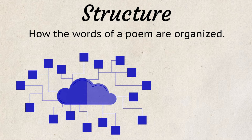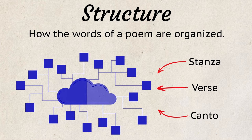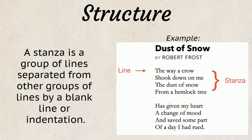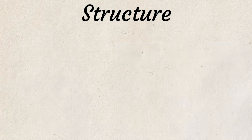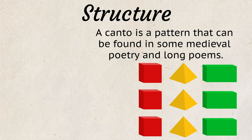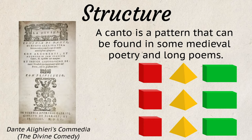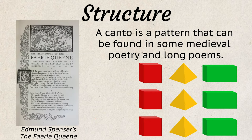Structure is how the words of a poem are organized. The elements of structure include stanza, verse, and canto. A stanza is a group of lines separated from other groups of lines by a blank line or indentation. A verse is a stanza that doesn't have a specific number of lines, but it all goes together and makes sense. A canto is a pattern found in some medieval and long poems like Dante Alighieri's Commedia, The Divine Comedy, and Edmund Spencer's The Fairy Queen.